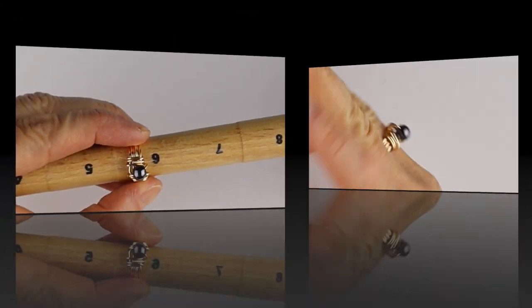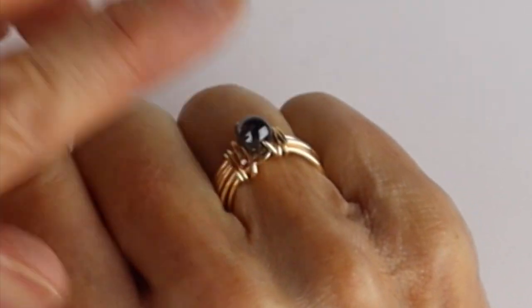Account for about one ring size depending on how much wire you wind around it. There's your funky unisex ring with a bead.